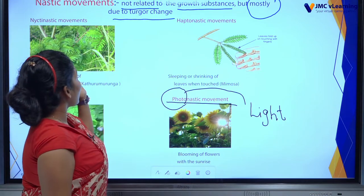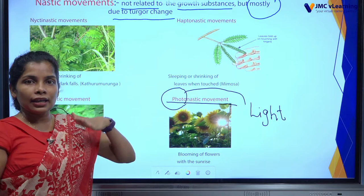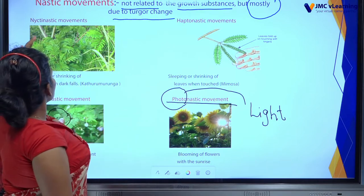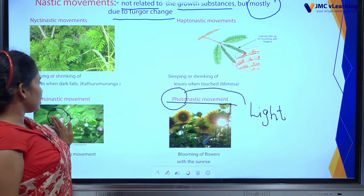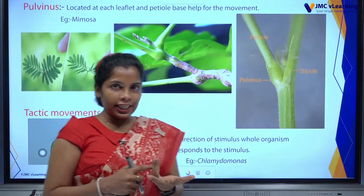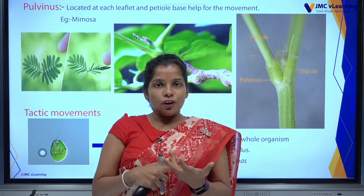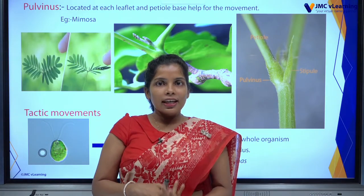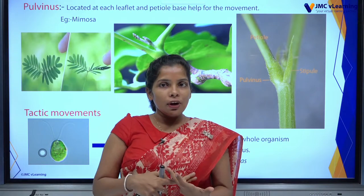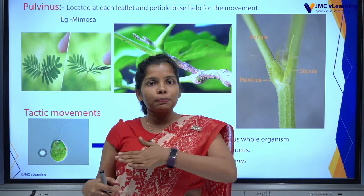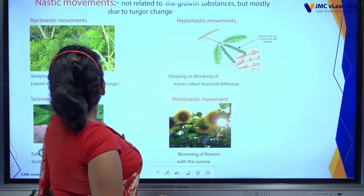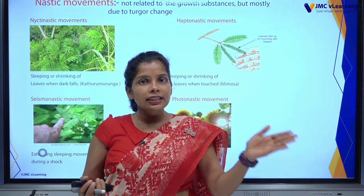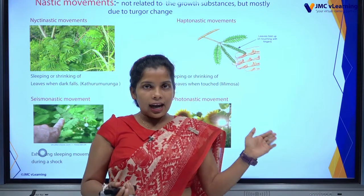Now you have the idea of all four nastic movements. What is the first one? Nictonastic movements. We already discussed haptonastic, nictonastic, sesmonastic, and photonastic movements. Those movements belong to nastic movements. We already discussed tropic movements and nastic movements.